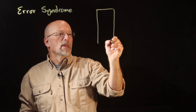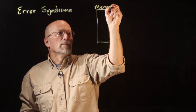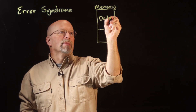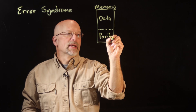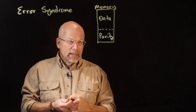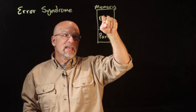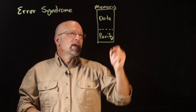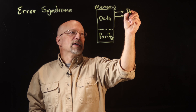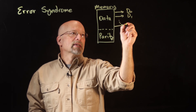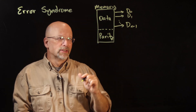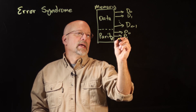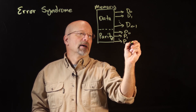From memory, whenever we look at memory, we've got two sets of bits. We've got the data bits and we've also got these parity bits — the bits that identify if the bits inside of the data have been modified at all. So we have data bits D0, D1, all the way down to D sub N minus 1, and then parity bits P sub 0, P sub 1, all the way down to P sub M minus 1.